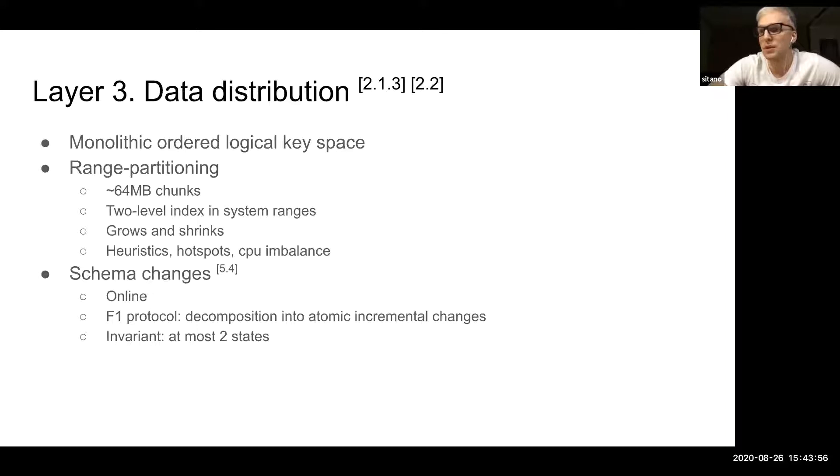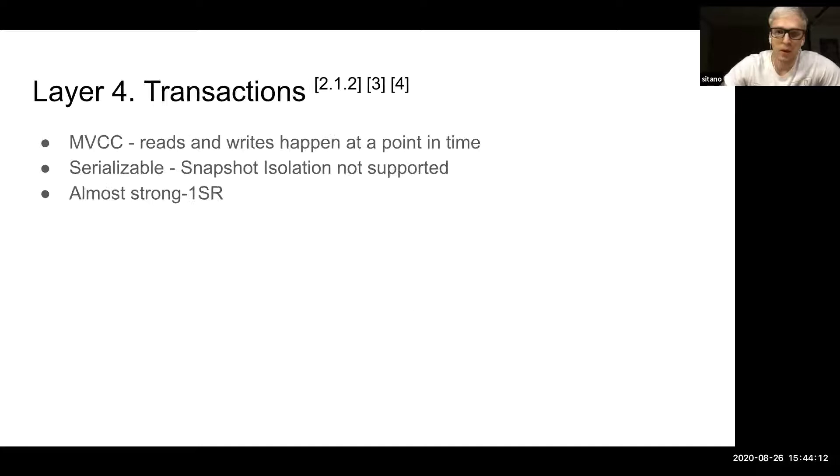The online schema change uses ideas derived from the F1 system from Google. Basically, the idea is that they decompose the schema change into small atomic incremental changes and maintain the invariant that there exists at most two states in the system at the same time. That works great. Next, on top of our monolithic key space, we can build a transaction layer, and that's what CockroachDB does on layer four.